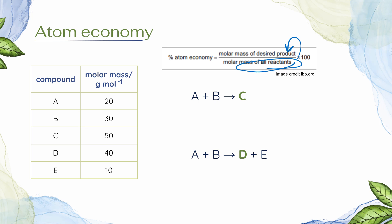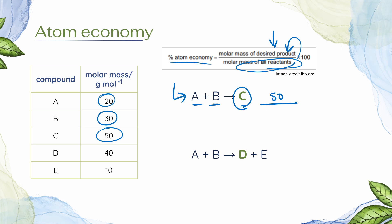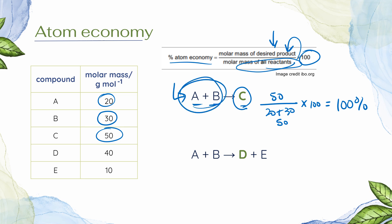The idea behind atom economy is to get as much of the masses of the reactants into the product as possible. Let's do a simple calculation. Say A and B are my reactants and we're producing desired product C. Using the percent atom economy equation, I put the molar mass of C — 50 g/mol — divided by the sum of the masses of all reactants: A is 20 g/mol and B is 30 g/mol, so 20 plus 30 equals 50. Then 50 divided by 50 is 1, times 100 is 100%. That means 100% of the masses of my reactants ended up in my product — no waste. Wonderful!